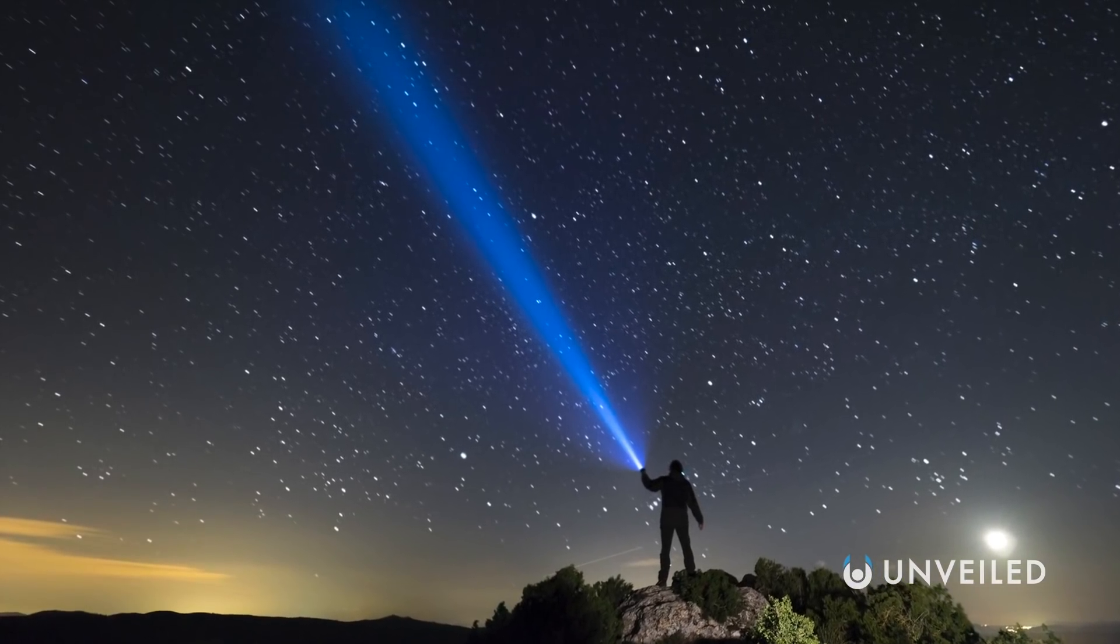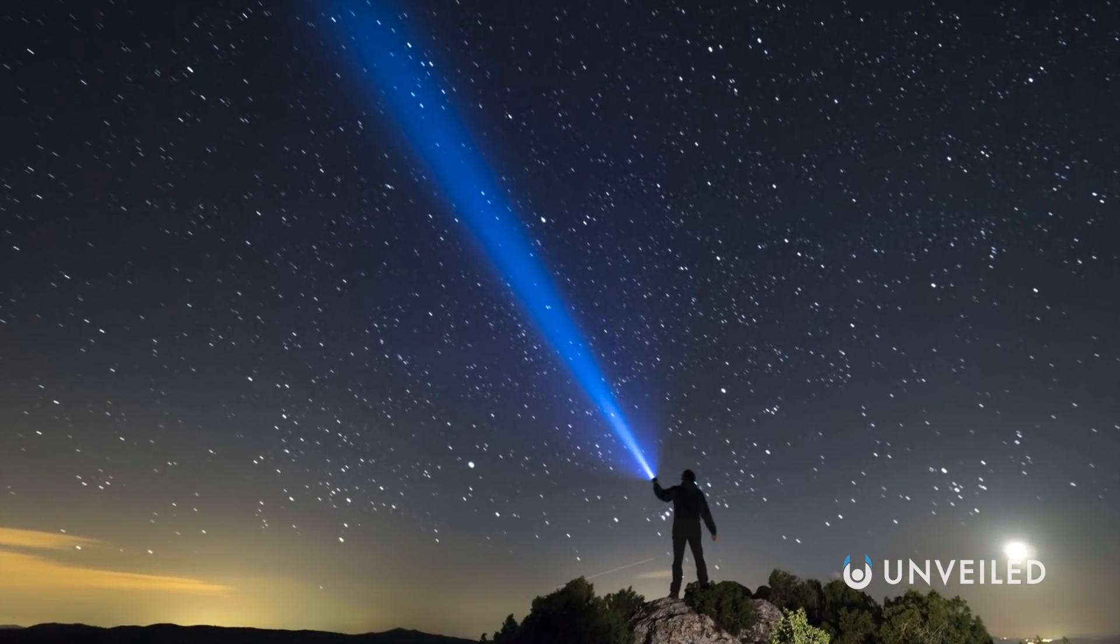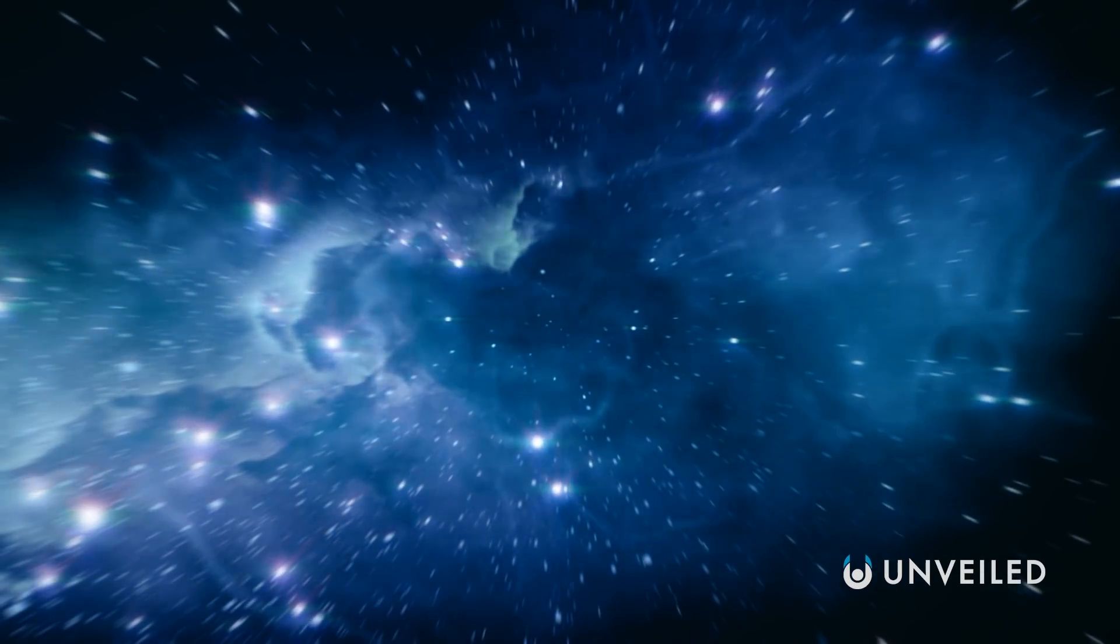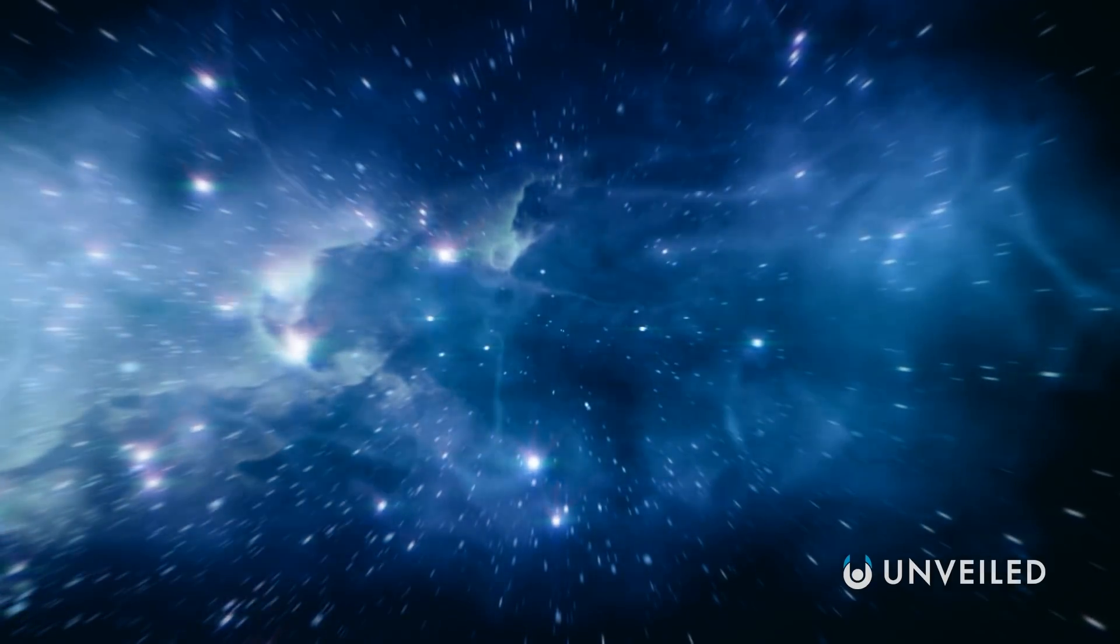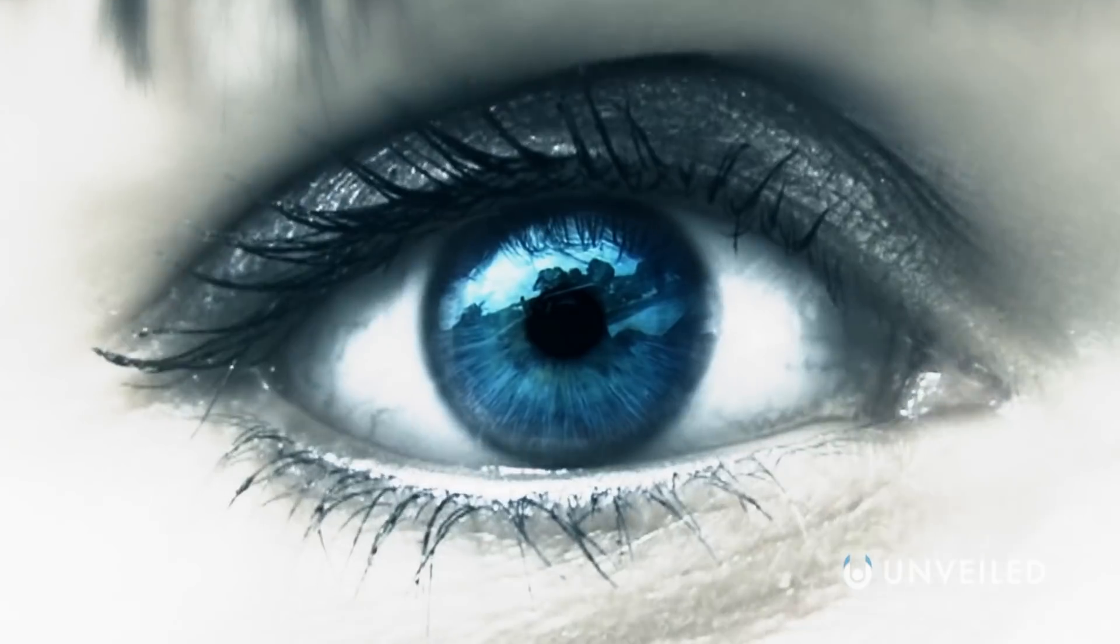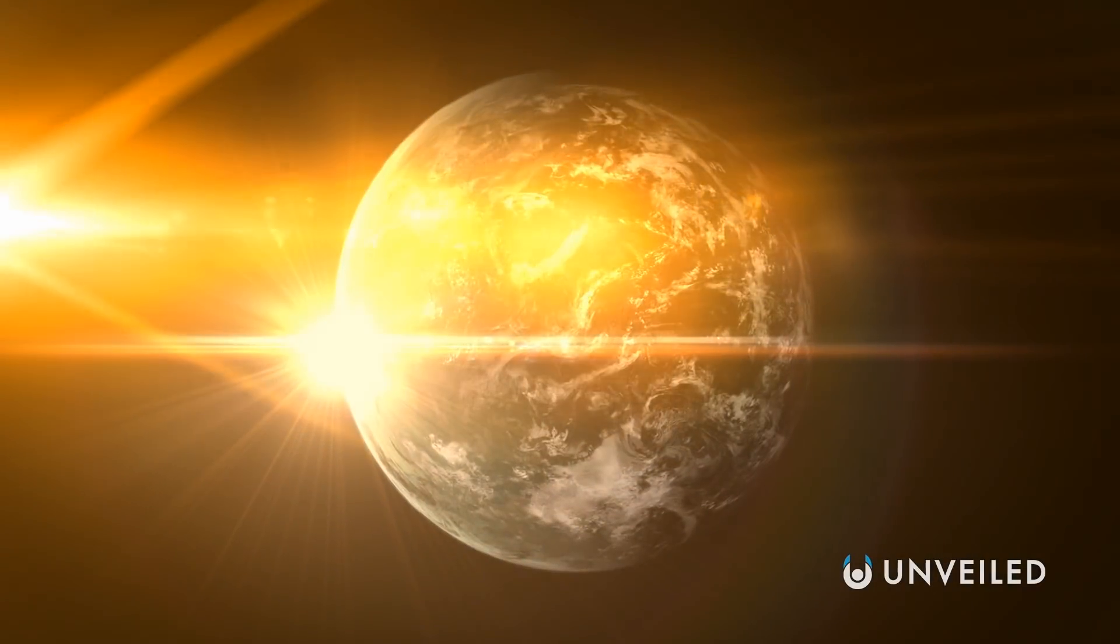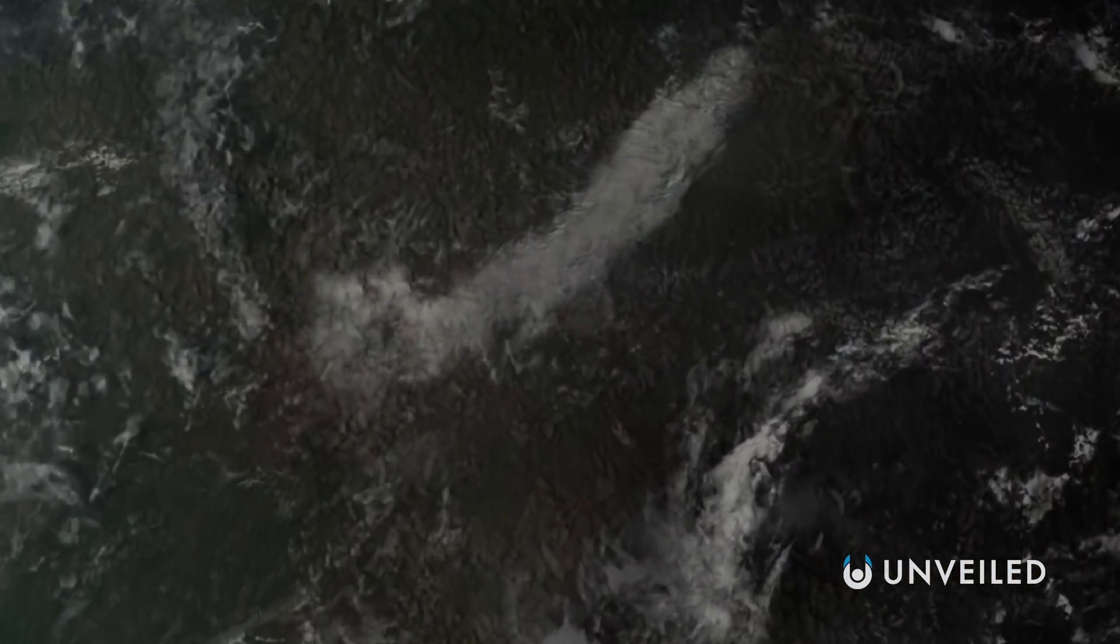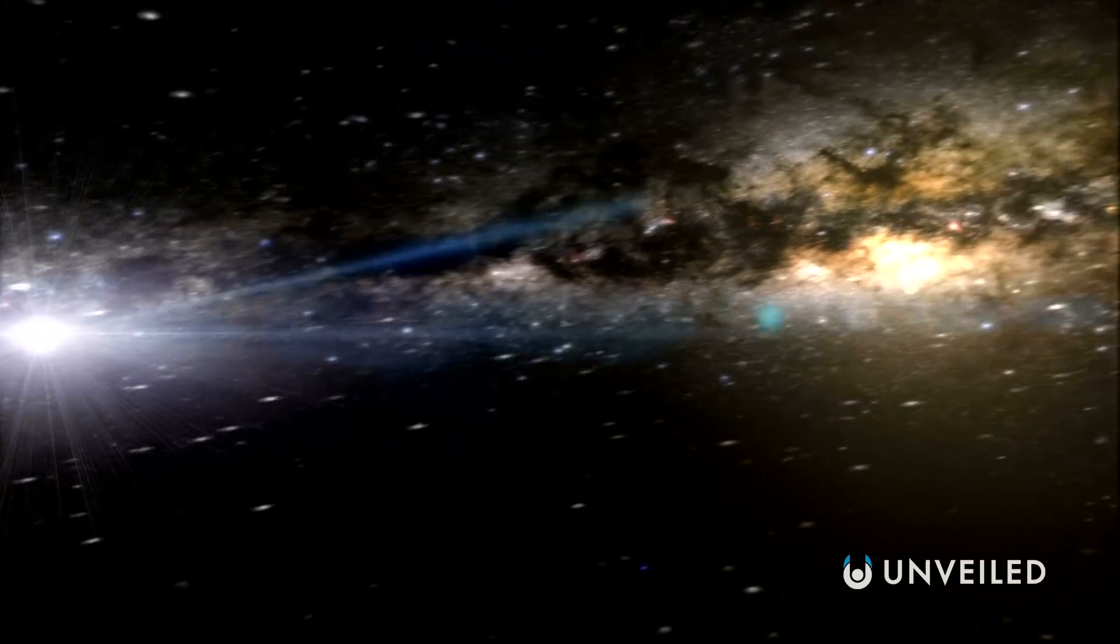Let's start with the observable universe, as that, by definition, has a defined edge to it. The universe has been around for about fourteen billion years, and during this time only so much light has had time to reach us through the vastness of space. Given the rate at which the universe has expanded since that light started travelling towards us, the farthest objects we can now see is estimated at forty-seven billion light-years away.